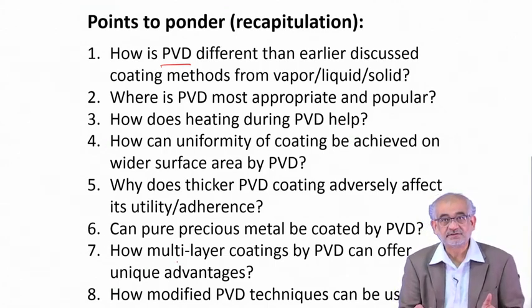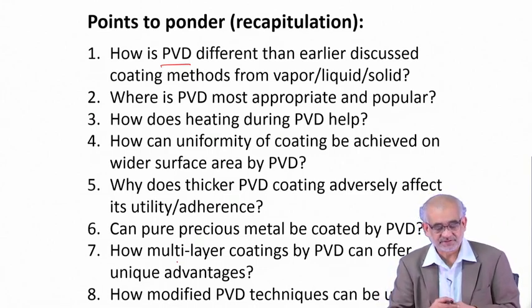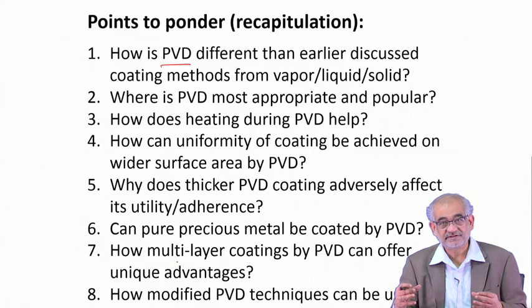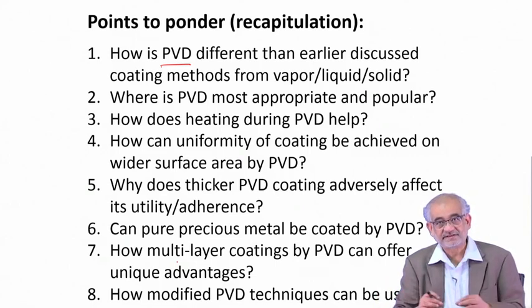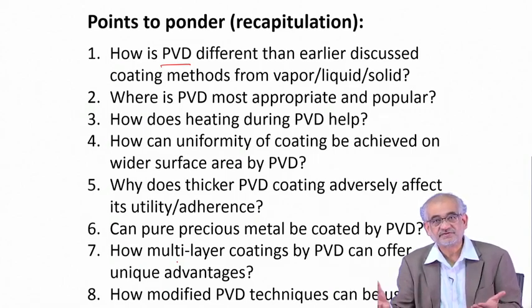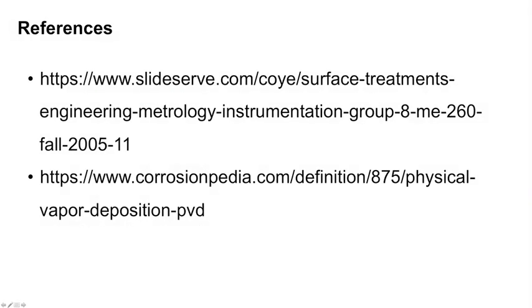We can make multi-layer coatings A, B, C or A, B, and vary their thickness sequentially by controlling the PVD process parameters. We can also use modified PVD by introducing reactive gases to form coatings that are not pure tin but tin oxide, or not zinc but zinc oxide, creating sensors or other devices with very exotic microstructures not possible by conventional techniques. We stop here and in the next lecture we will discuss a special technique of PVD called sputtering. Thank you very much.